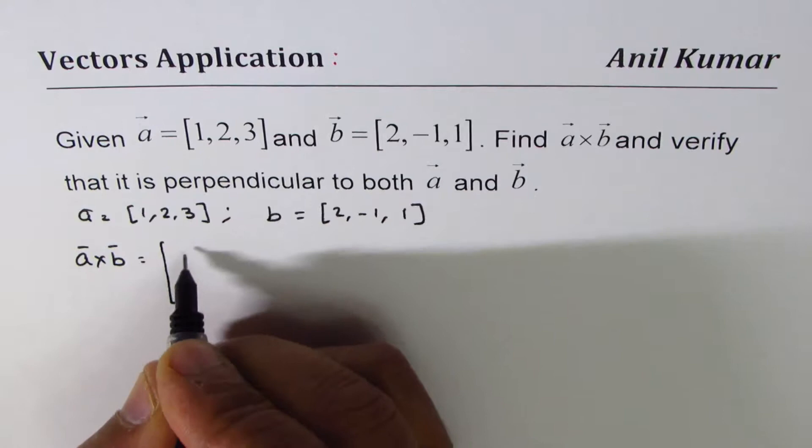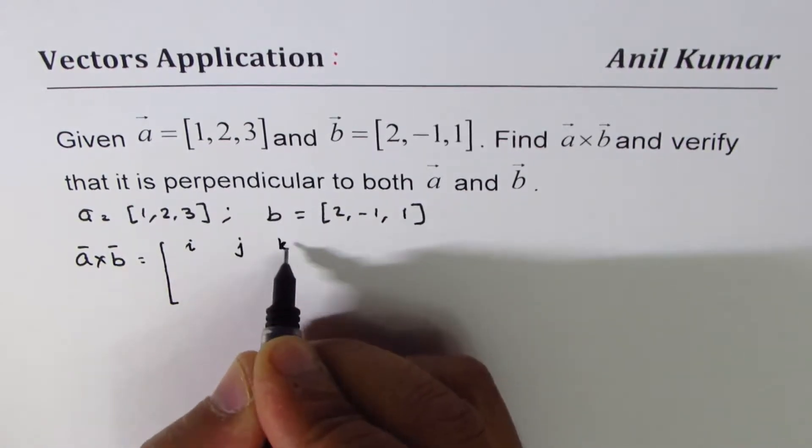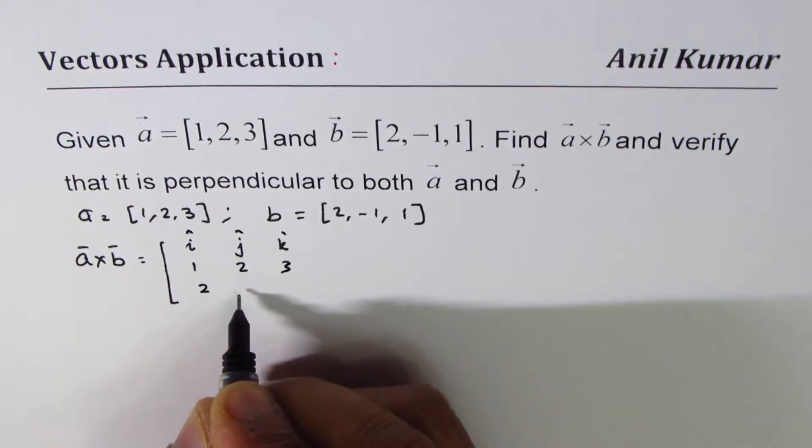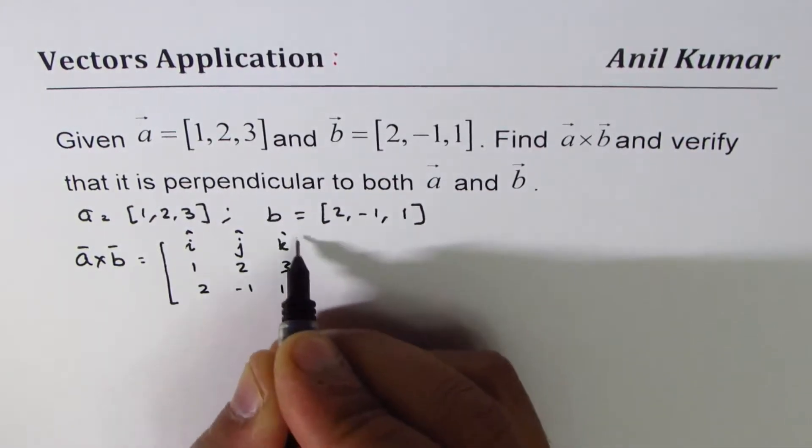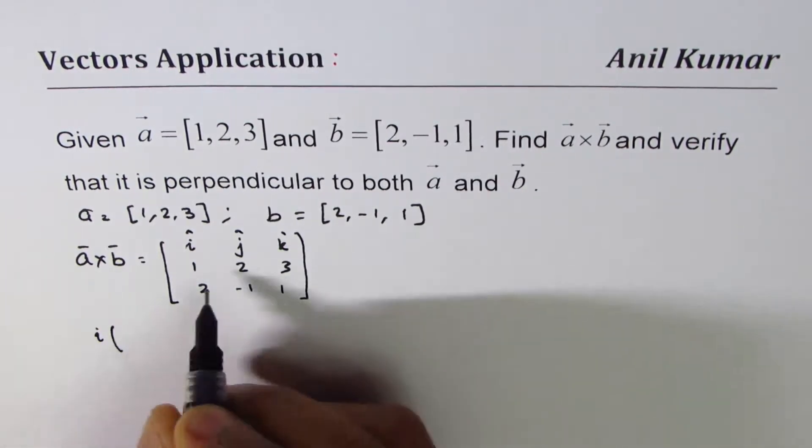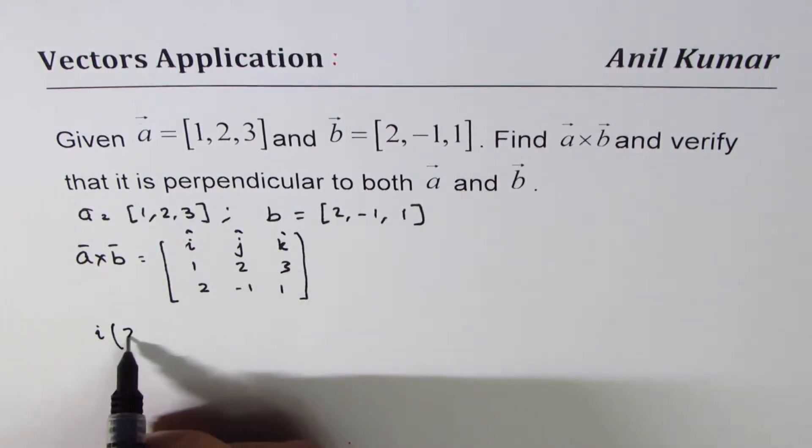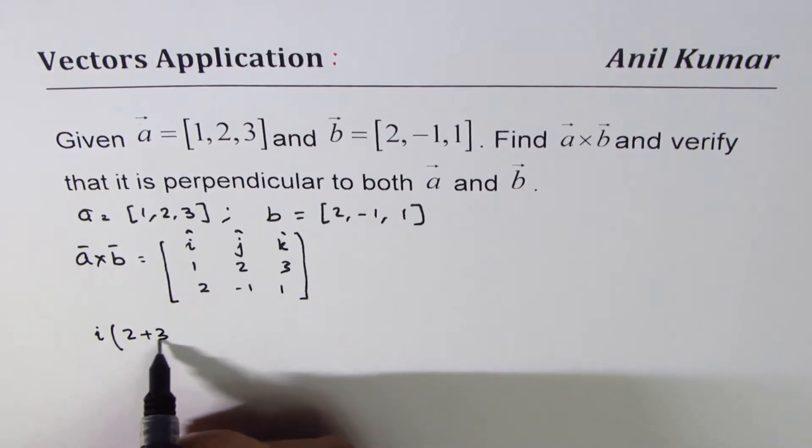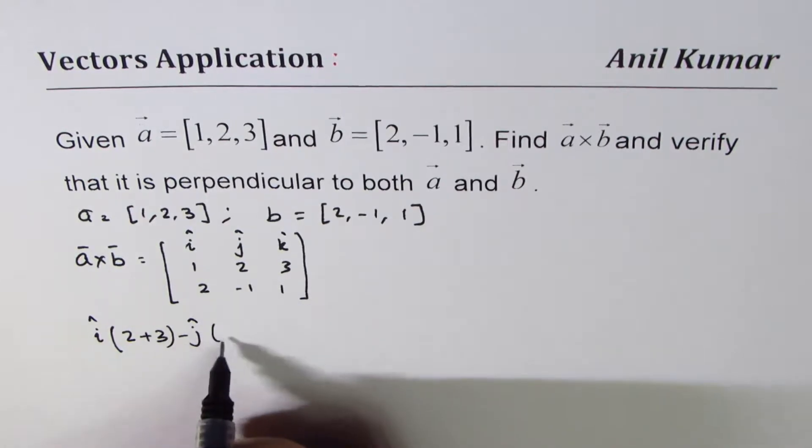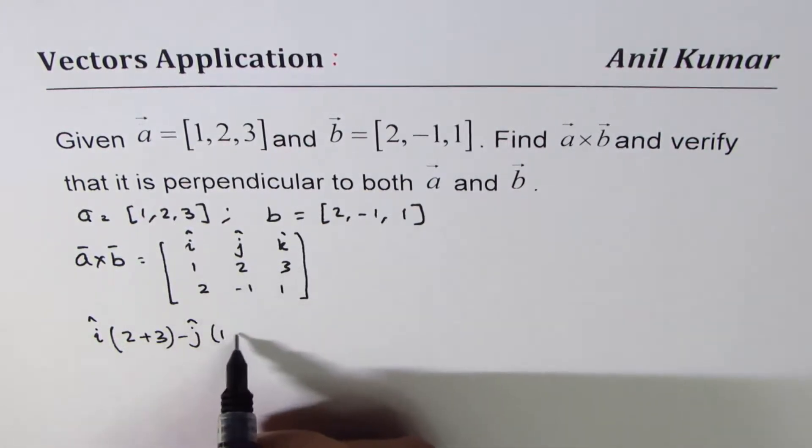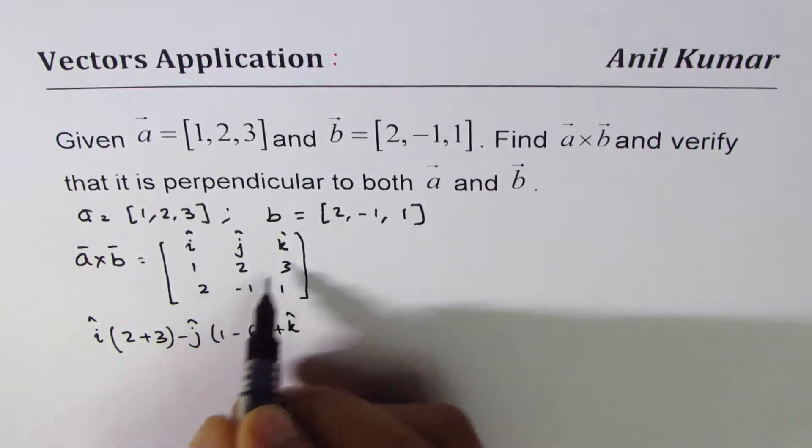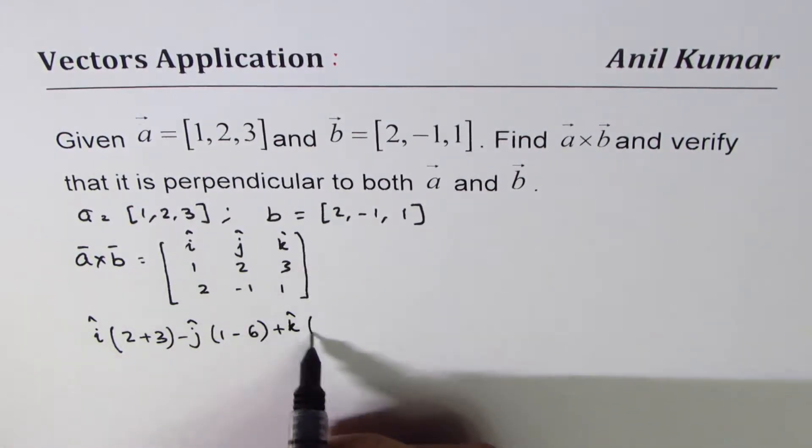So we have i, j, k - these are unit vectors - then [1,2,3] and [2,-1,1]. We can say this is i times (2 times 1 is 2) minus (-3) which becomes plus 3. Minus j times (1 times 1 minus 2 times 3) which is 1 minus 6.